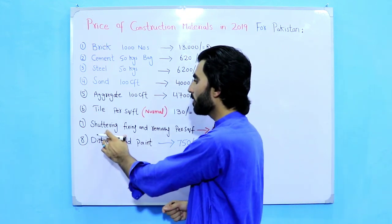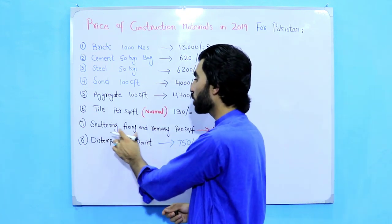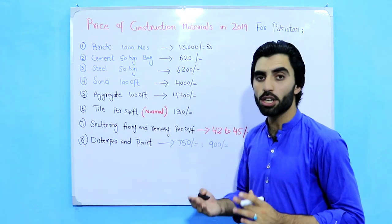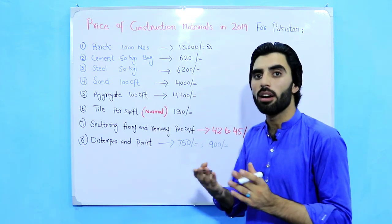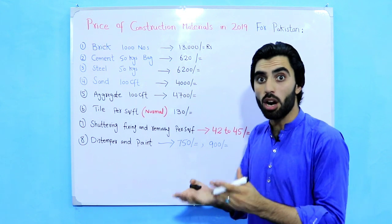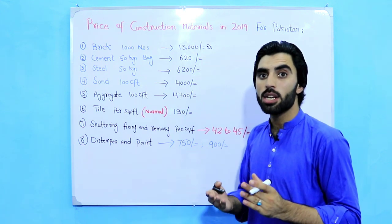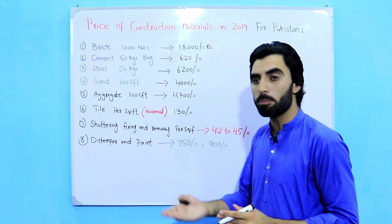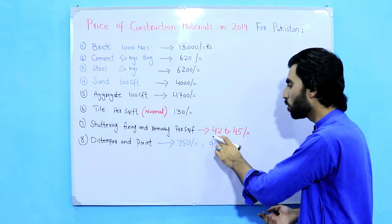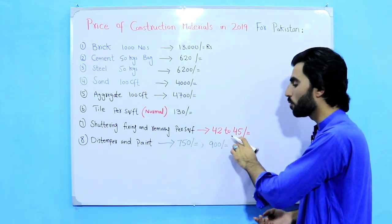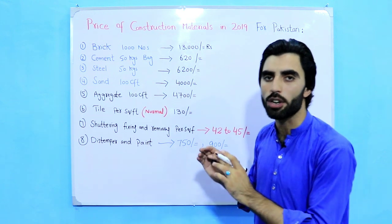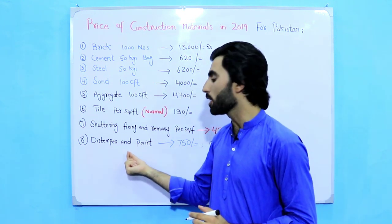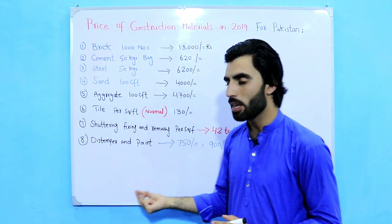The seventh item is shuttering: fixing and removing per square feet. We use shuttering for beams, columns, slabs, etc. This includes labor cost for fixing and removing, and the rate is 42 to 45 rupees per square feet.